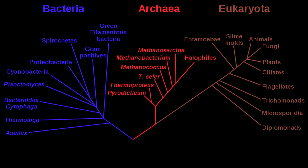Over time, different modes of isolating mechanisms such as allopatric, sympatric, peripatric, and parapatric speciation can cause different variations to evolve independently, which leads to speciation.